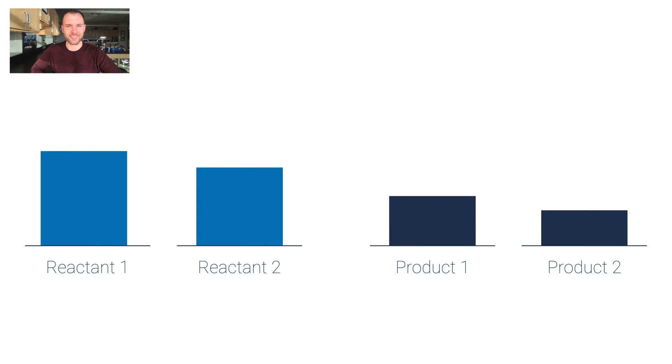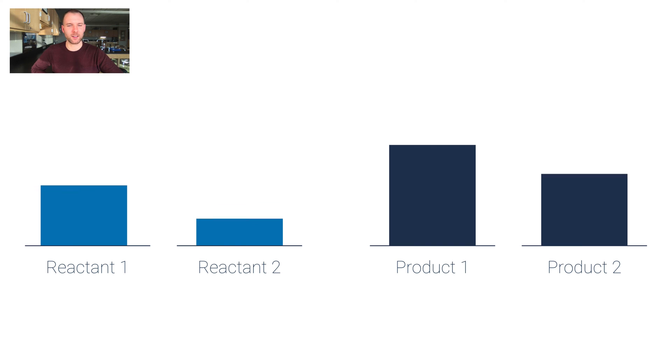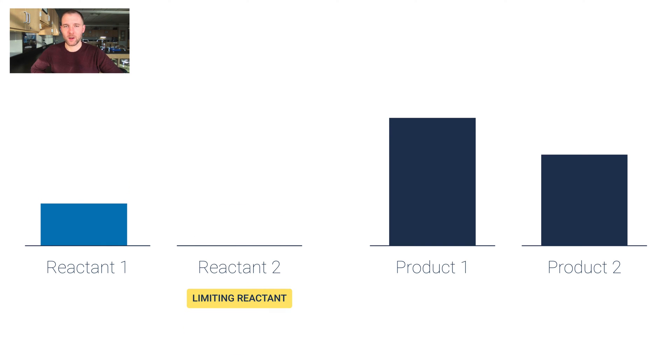I'm getting rid of reactants because they're turning into products. But it looks like reactant two is reacting at a faster rate. And we're done.